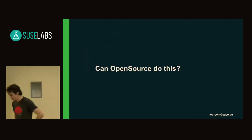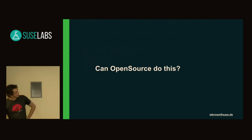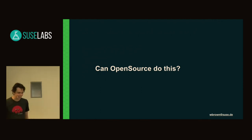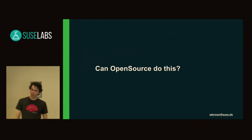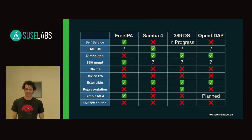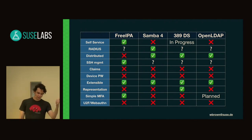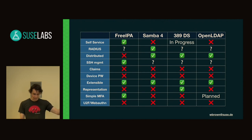So I asked myself: can open source do this? Basically, FreeIPA only has self-service, SSH management, extensibility, and simple multi-factor. That's it. It does not have read-only domain controllers. It supports RADIUS but not well. It doesn't have claims. It'll probably never support them. It doesn't have per-device passwords.